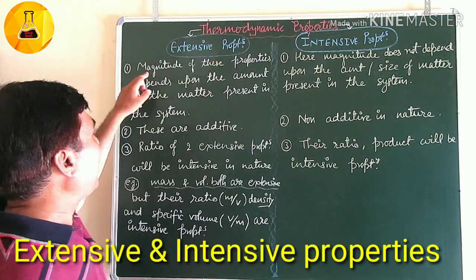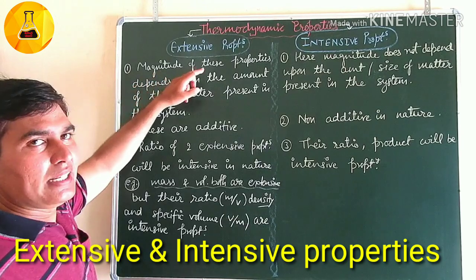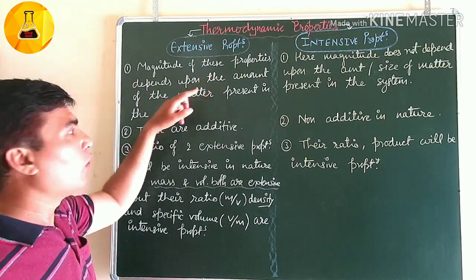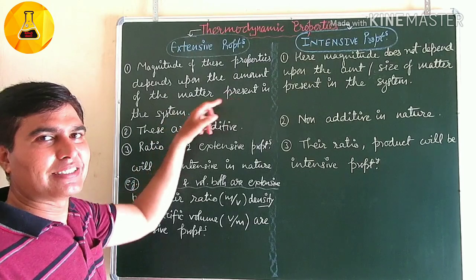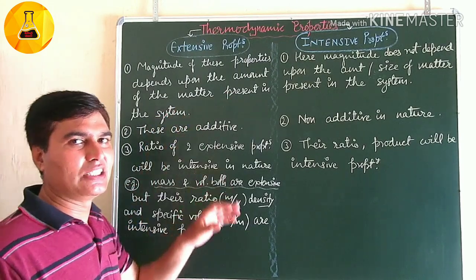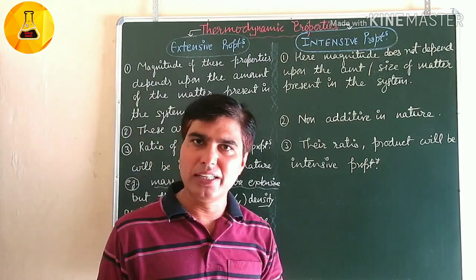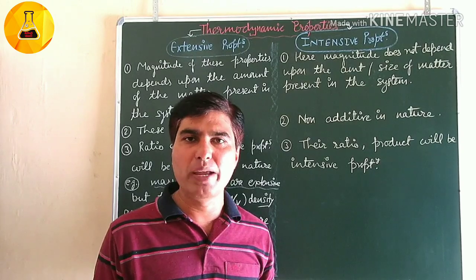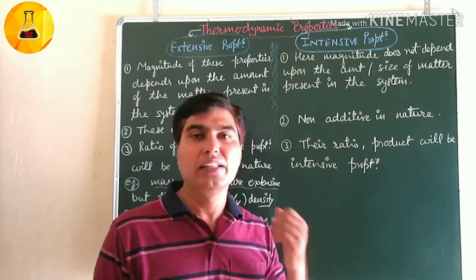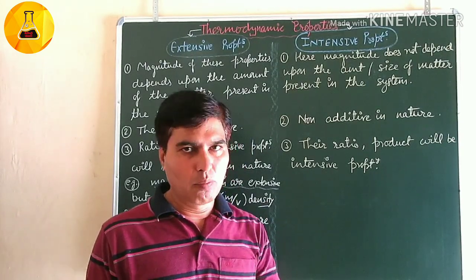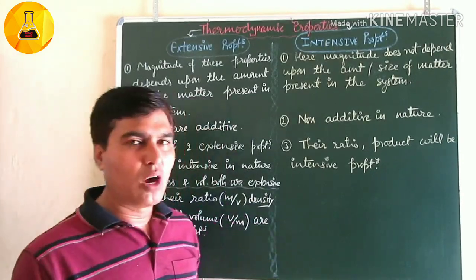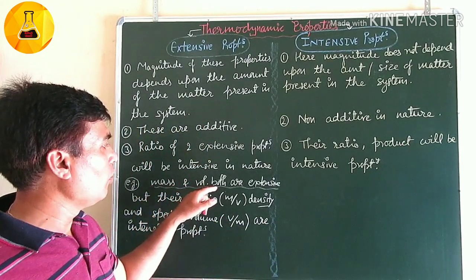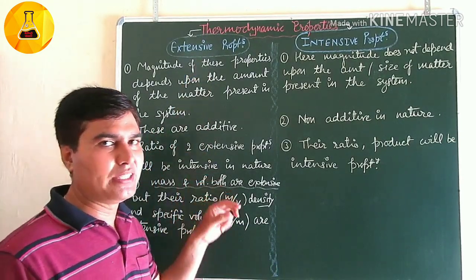Extensive properties: the magnitude of these properties depends upon the amount of matter present in the system. You know the system can be solid, liquid, or gas — any one of these can be used for thermodynamics. So we have mass and volume as two extensive properties.